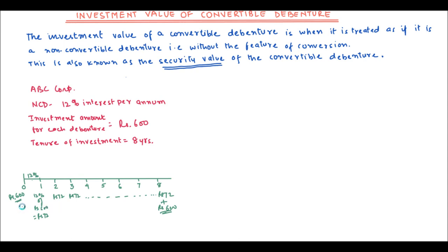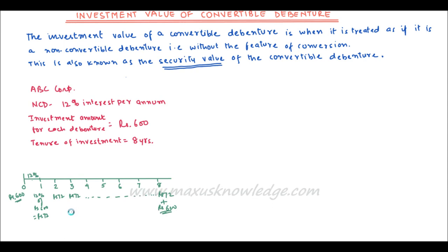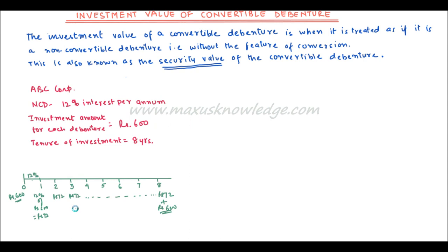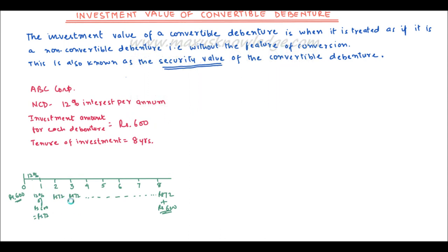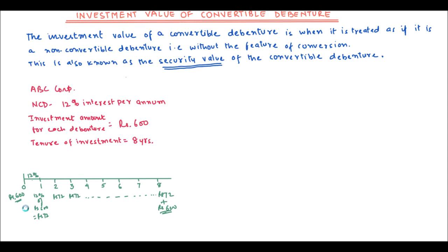Now we have to find out the value of this non-convertible debenture. I recommend you also look at my videos on the subject of time value of money, where we consider how to find present value and future value — the same concept we will use here to find the investment value of a convertible debenture. Basically, we are getting Rs. 72 every year.